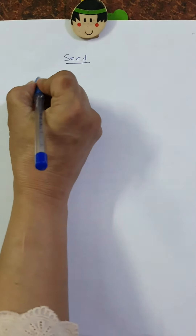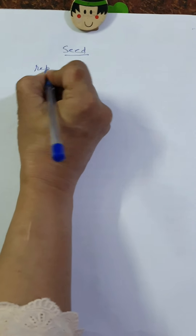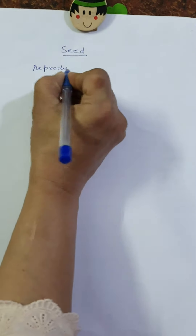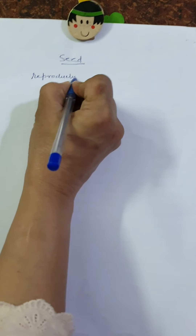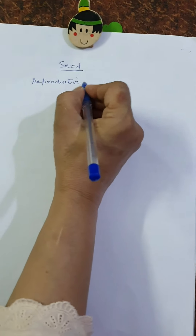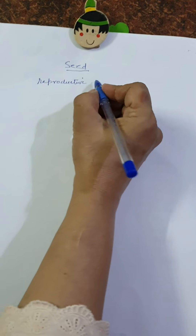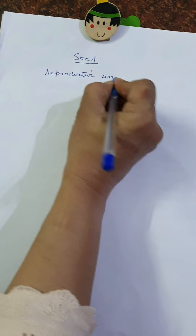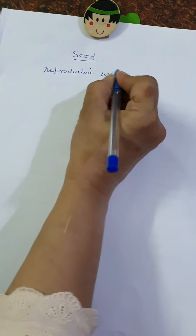Today's topic is seed. Seed is a very important part of a plant — in fact, part of the fruit. Its function is that it acts as a reproductive unit. A seed acts as a reproductive unit, meaning a plant will reproduce the same plant.